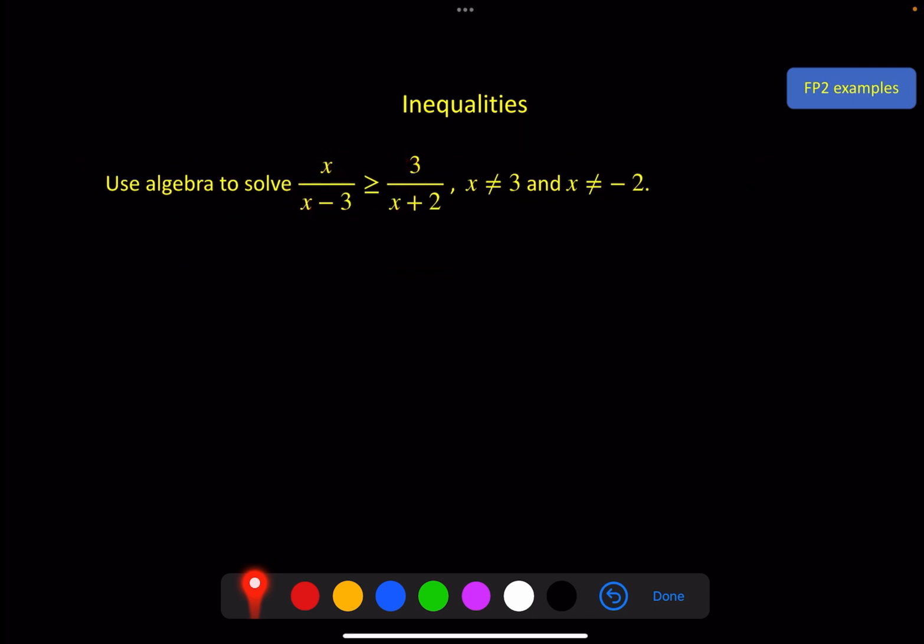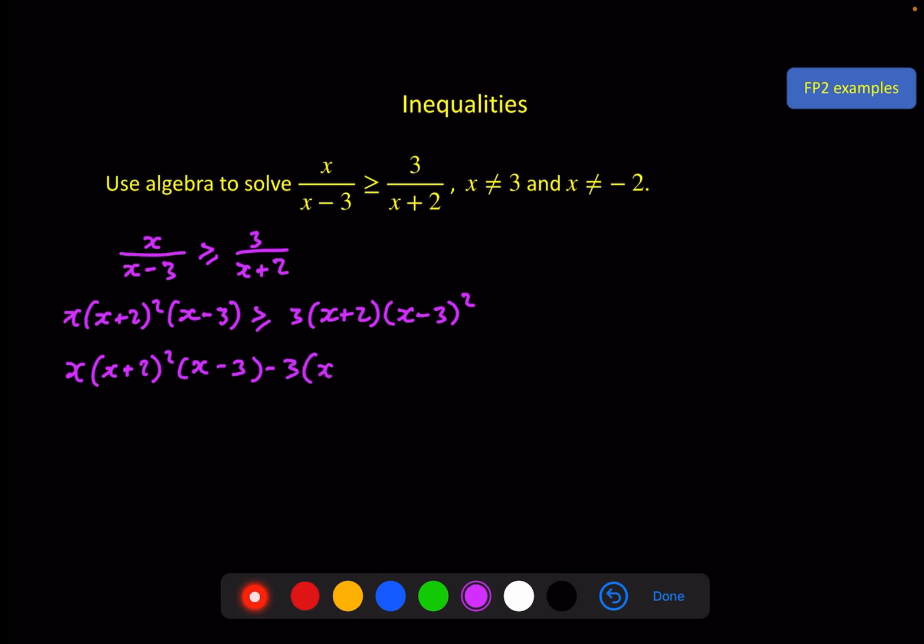Use algebra to solve this, where x is not equal to three, and x is not equal to -2. So we do the same sort of approach, even though there are two fractions. We're going to square both of these denominators, multiply both sides. So we get (x + 2)² over here, and (x - 3)², but one cancels with the denominator. And then the same over here, we've got x + 2, and (x - 3)². And here we see a bit more powerfully, the reason why we move, factorize, and then deal with what we've got left, rather than try to expand all this out and collect like terms, because now we've got two common factors. So if I move that all to the left, we get this minus this, and all of that has to be greater than or equal to zero.